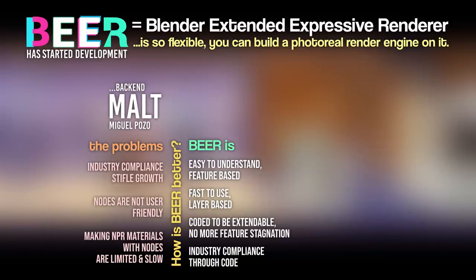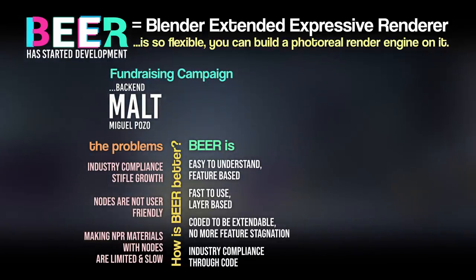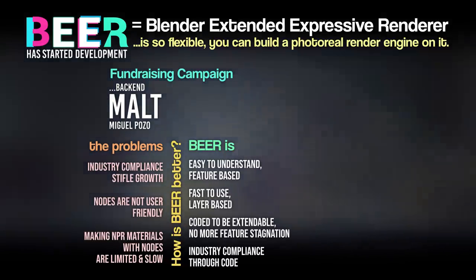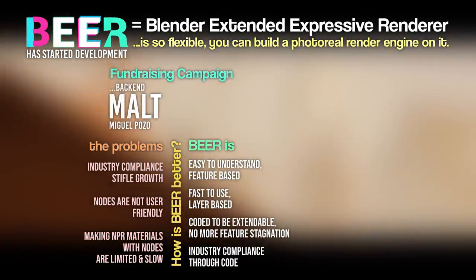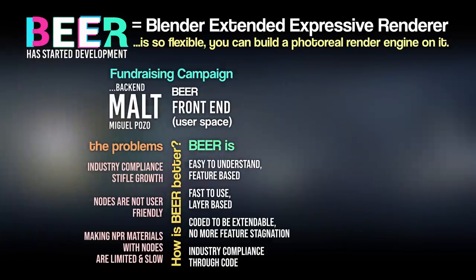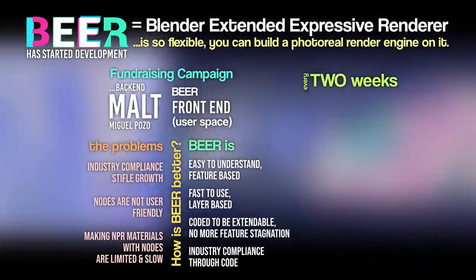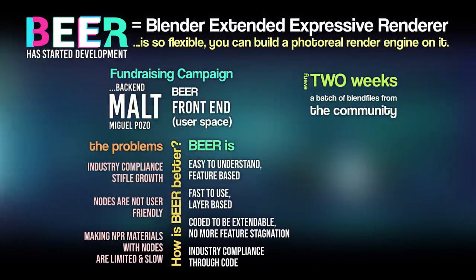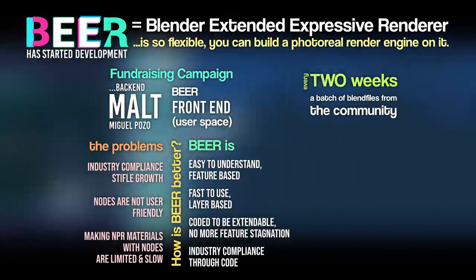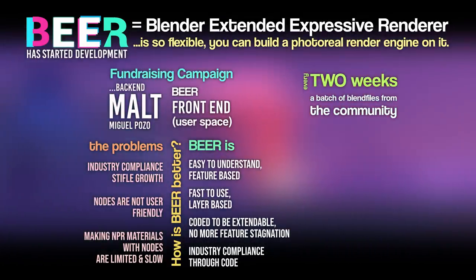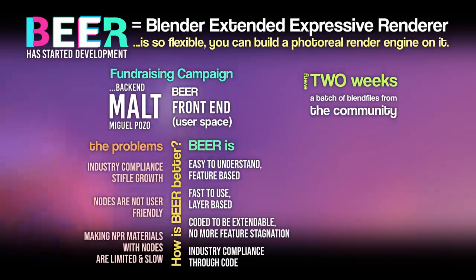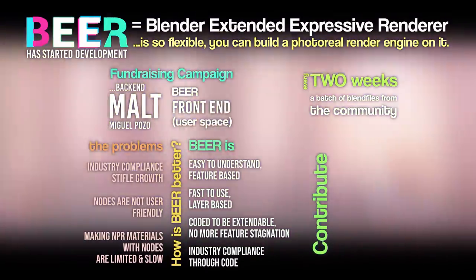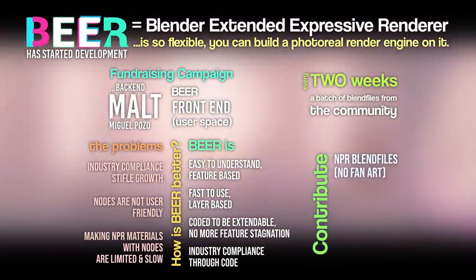Currently, we have a fundraising campaign to help Beer's development. The money is divided into two portions: funds for the development of Malt, the back end of Beer, and funds for the front end of Beer. Every two weeks, there will be a batch of blend files from the community. You can buy these blend files, and 100% of your money — minus fee cuts — will go directly to fund the project. At the time of making this video, we are about 40% funded.